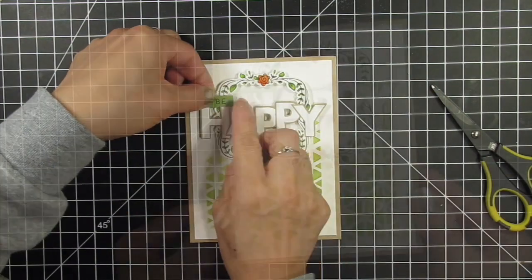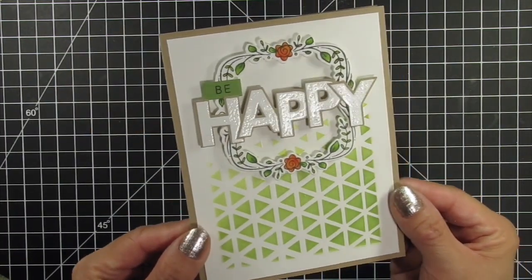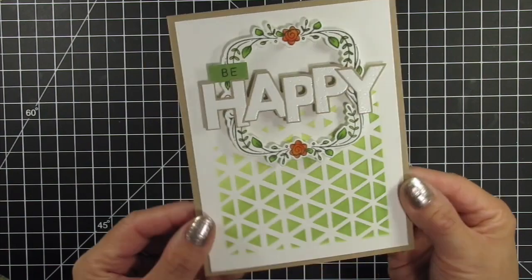I had the toughest time deciding how to finish this card and tried so many different colors with the sentiment strips, but finally decided to finish it with the word Be on Pea Pod cardstock and tuck it right there on the left above the die cut.